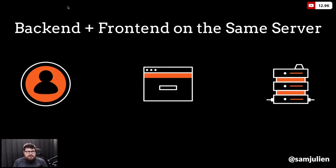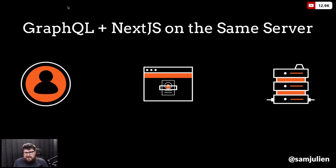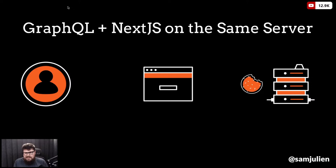Let's look at a concrete example. If you have your backend and frontend on the same server — say a GraphQL server like Apollo and Next.js as the frontend — the user can send credentials to the frontend, which passes them back to the server, and the server issues a cookie with the session information. This is a perfectly valid approach when everything is on the same server, because there's just a round trip with nothing traversing across the internet to other servers.